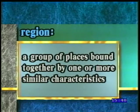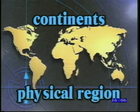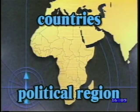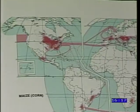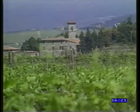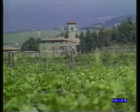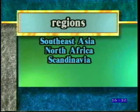Our fifth and final theme of geography is region. A region is defined as a group of places bound together by one or more similar characteristics. Continents are physical regions. Countries are political regions. There are also climate, vegetation, and landform regions. In the United States, there is a farming region known as the Corn Belt in the Midwest. And in France, there is a region of vineyards known as the Wine Region. Some other regions include Southeast Asia, North Africa, Scandinavia, and the Caribbean Basin.